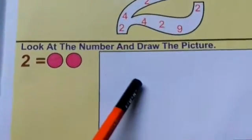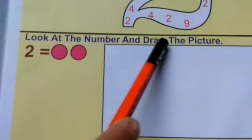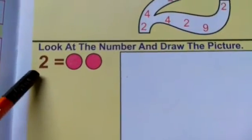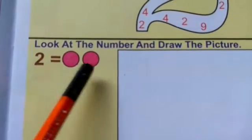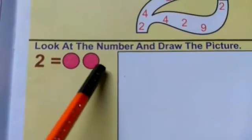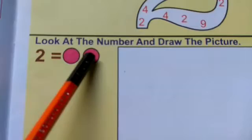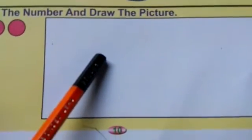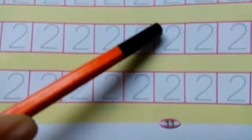Next: look at the number and draw the picture. The number 2. What is it? The number 2 — there is a circle. The number 2, the number 3 — this picture is the name. Page number 11. This one is the number 1.